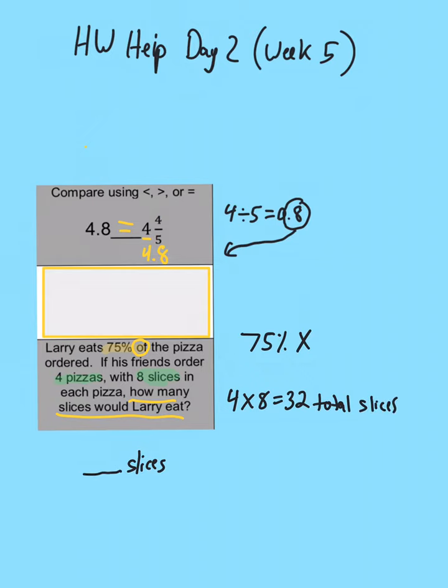Now remember Larry only ate 75% of that. So you have to figure out 75% times 32 slices. If you type this in your calculator, you'll get your answer. Now remember to do that.